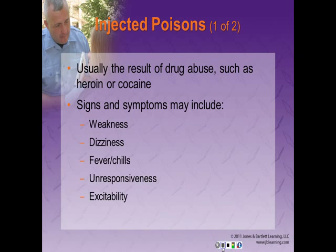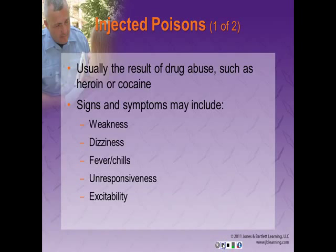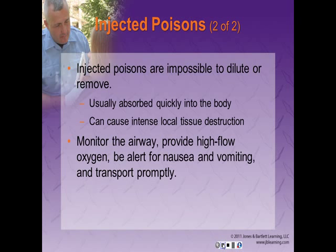Injected poisonings occur as the result of drug abuse such as heroin and cocaine. Insects and animals may also inject a patient with poison. Signs and symptoms include weakness, dizziness, fever, chills, unresponsiveness, and excitability. Injected poisonings are impossible to dilute or remove because they are absorbed quickly into the body or cause intense local tissue destruction. Monitor airway, provide high-flow oxygen, and be alert for nausea and vomiting. Transport promptly and take all containers, bottles, and labels to the hospital.